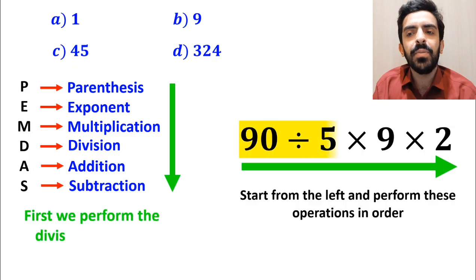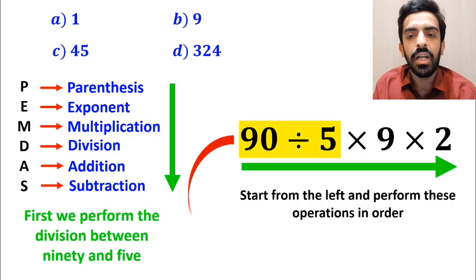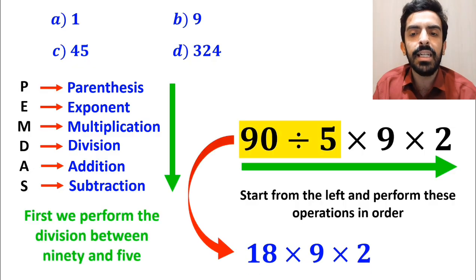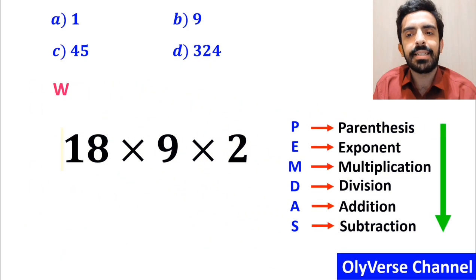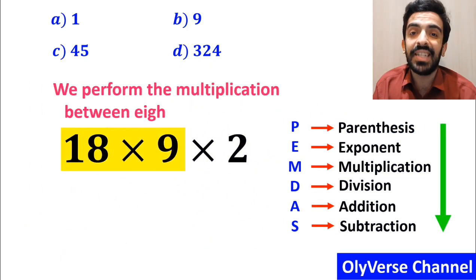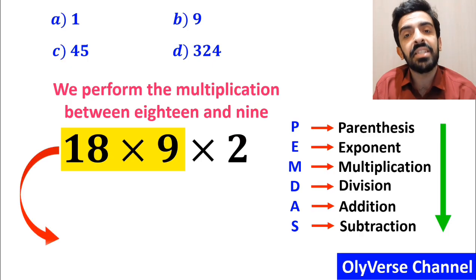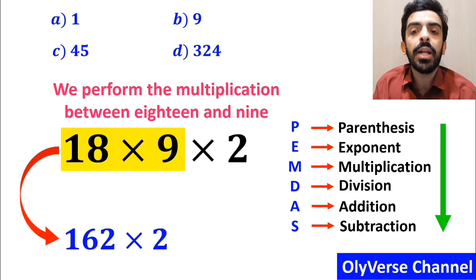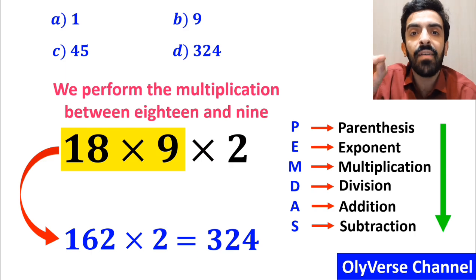So first we perform the division between 90 and 5, which simplifies this expression to 18 multiplied by 9 and again multiplied by 2. In the final step, we perform the multiplication between 18 and 9, and instead of this expression we can write 162 times 2, which finally gives us the answer 324.